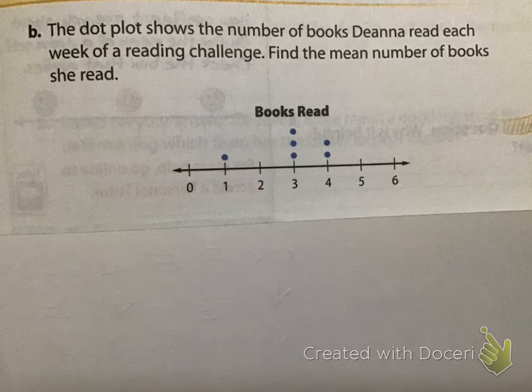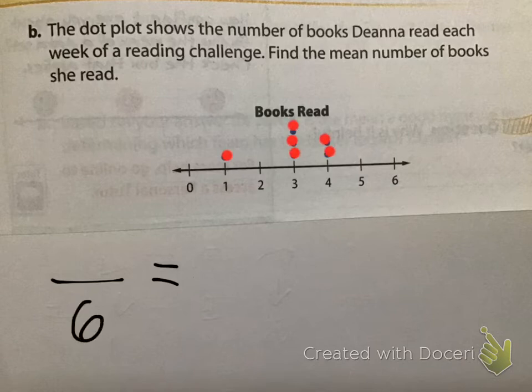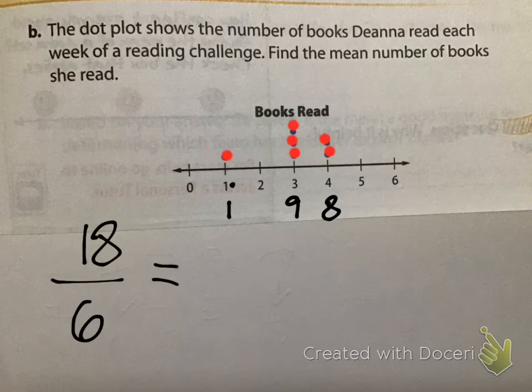The dot plot below shows the number of books Deanna read each week of a reading challenge. Find the mean number of books she read. I always like to start with our denominator, just our data points, how many. So, we don't mess that up. Here, we see 6 plot points. If we add them all up then, 1, 3, 3, 3, 4, 4. Here, what we get is 18. When we divide, we find out, again, that the answer is 3. There's 3 books each week.